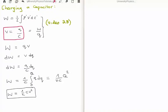So we can substitute in for our potential here. So we get V, which becomes q over C, and we multiply that by dq.